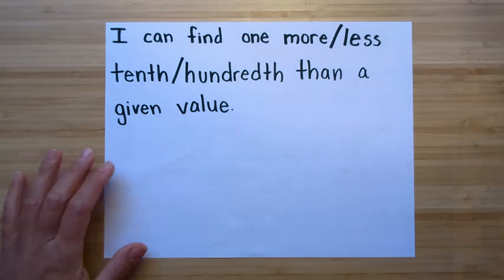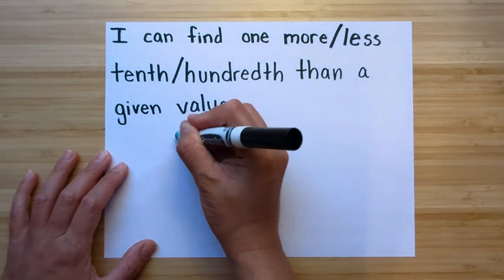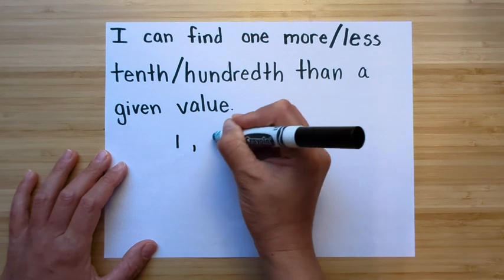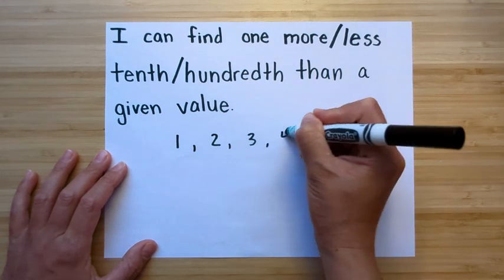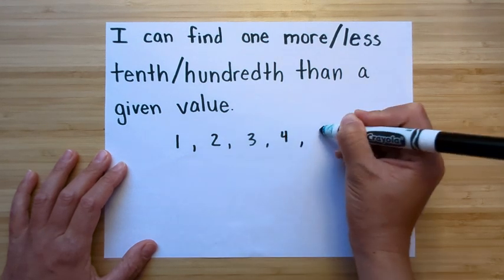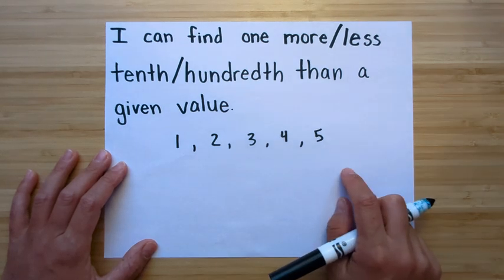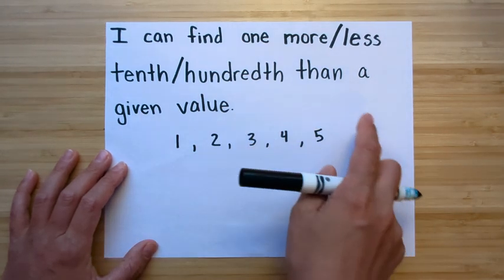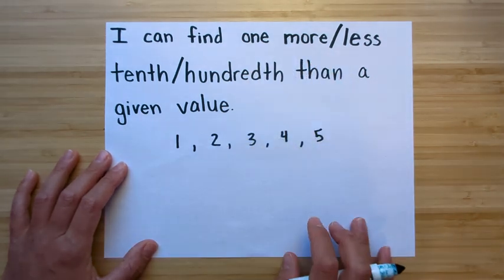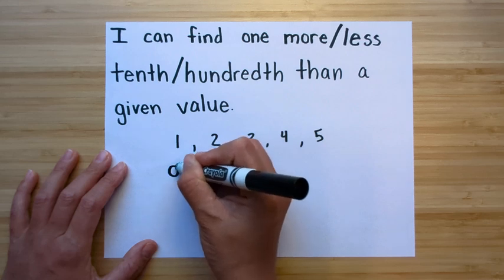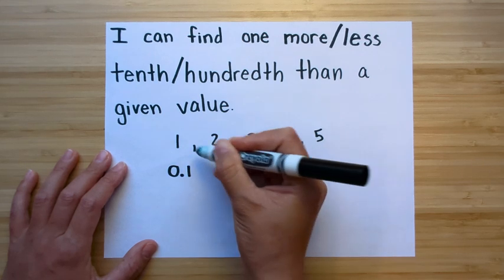Just really quickly, to look at tenths and hundredths so nobody gets confused — when you're counting whole numbers, you go one, two, three, four, five. You're just counting by ones. For tenths and hundredths, when you're adding one more or one less, it's the exact same thing, except now it's just in a different place value.